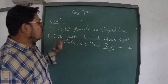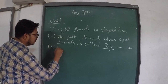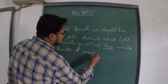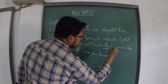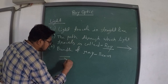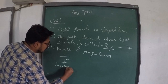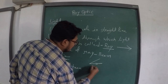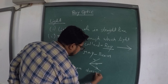The path through which light travels is called a ray. A bundle of rays is called a beam. There are different types of beams. If the rays are parallel, it is called a parallel beam of light. If they come out from one point, from one source, it is called a diverging beam.